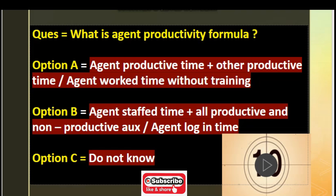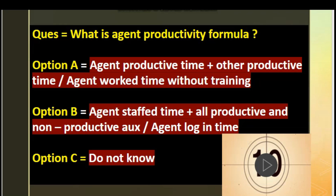Option B: agent staff time plus all productive and non-productive hours, divided by agent login time. Option C: do not know.